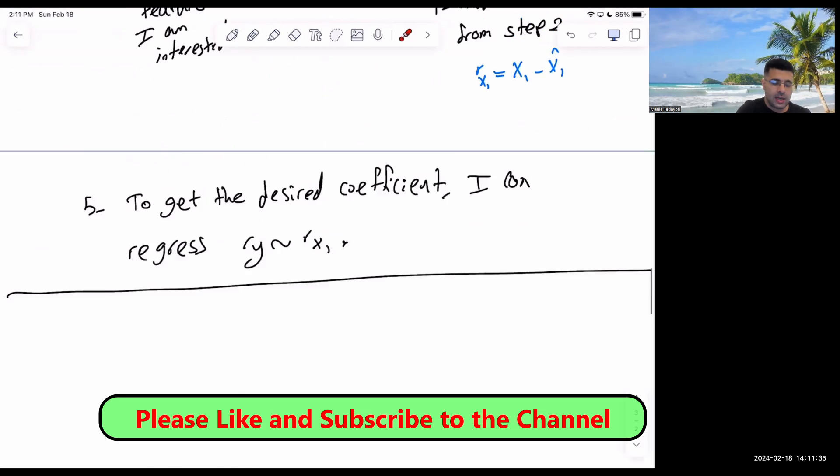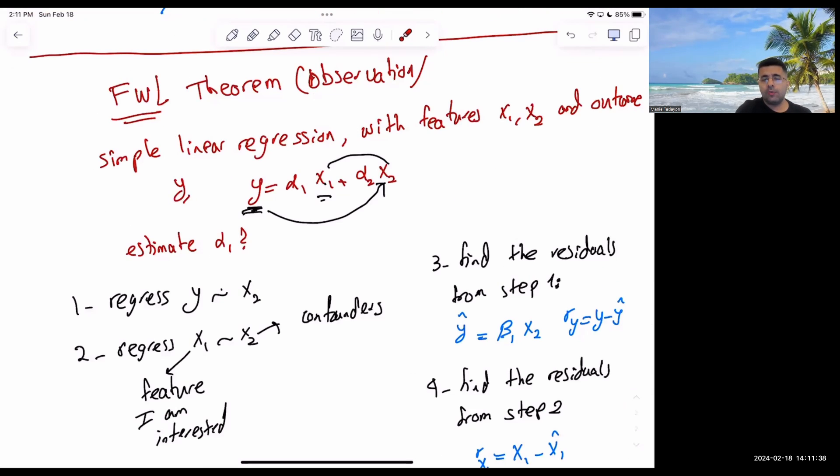The idea here is that if you have a regression problem, you want to estimate the alpha, which can be the treatment effect. All we have to do is regress the outcome on other features, find the residuals, we call it outcome residual. Regress the feature that we are interested in, let's say treatment, on other variables like confounders, find the residual, we call it treatment residual. Then regress the outcome residual on the treatment residual.